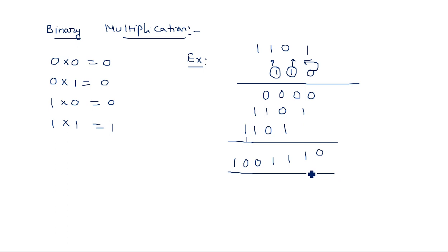Binary multiplication is easy and addition is also easy. Only subtraction may be somewhat difficult when you are dealing with borrows.